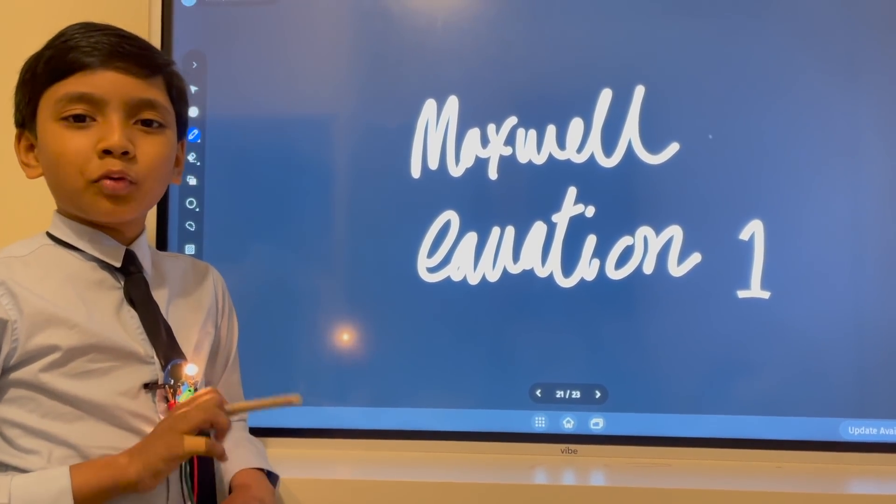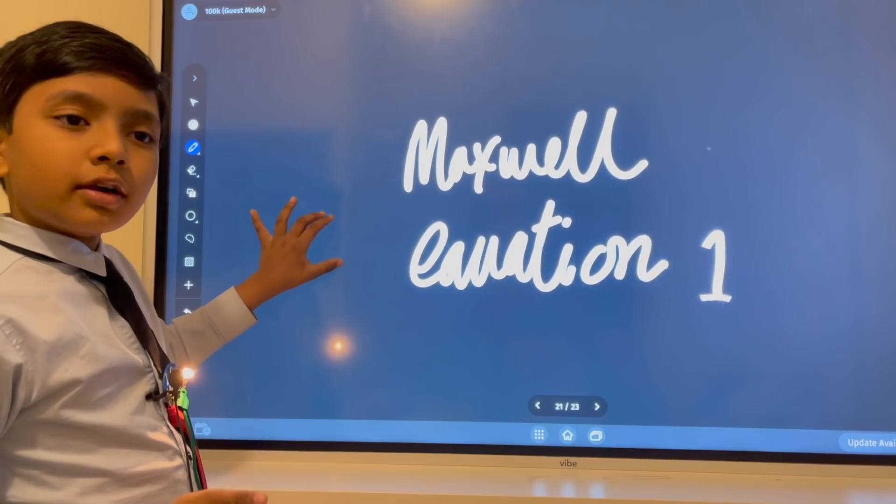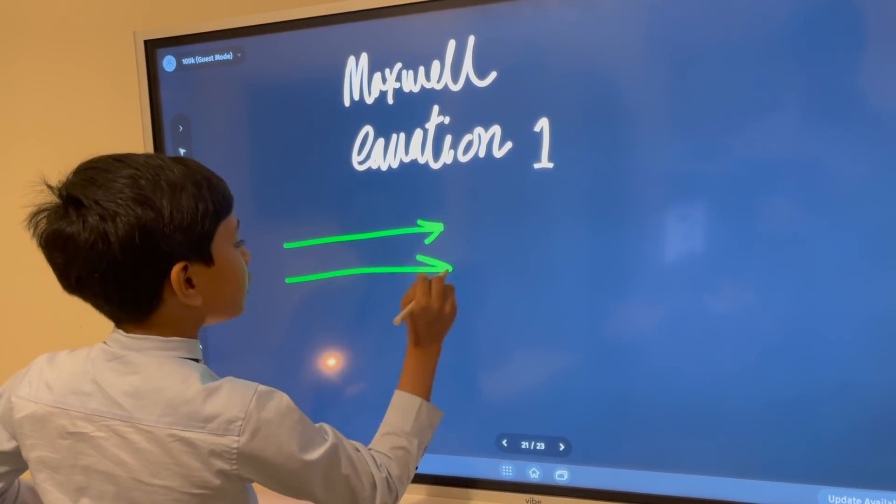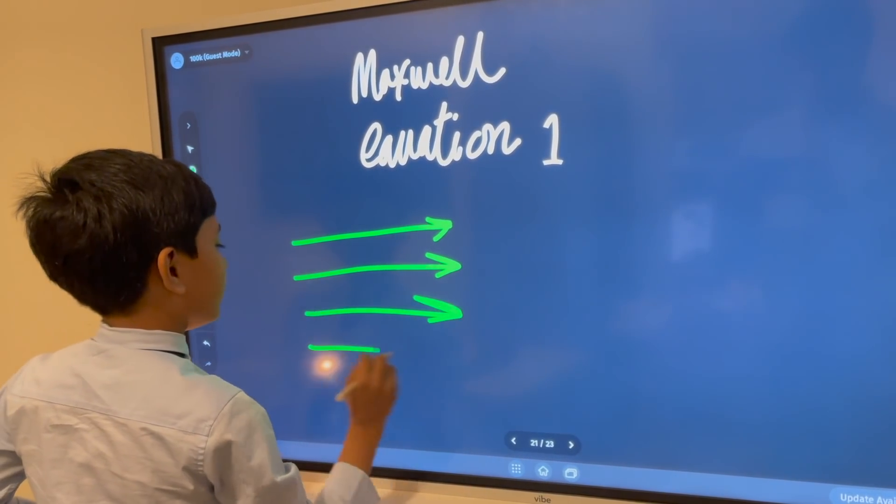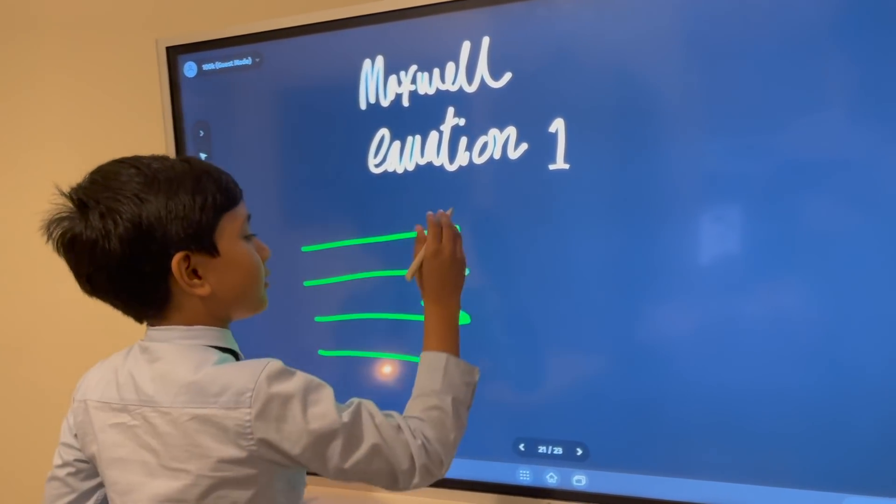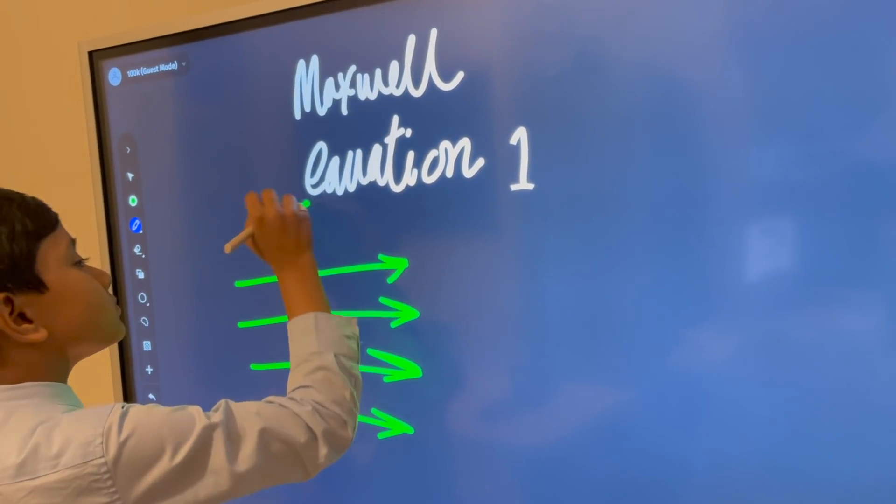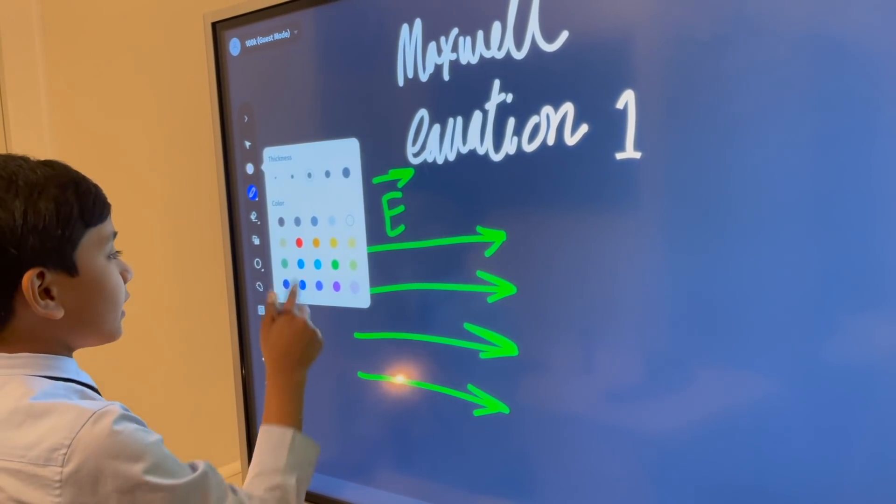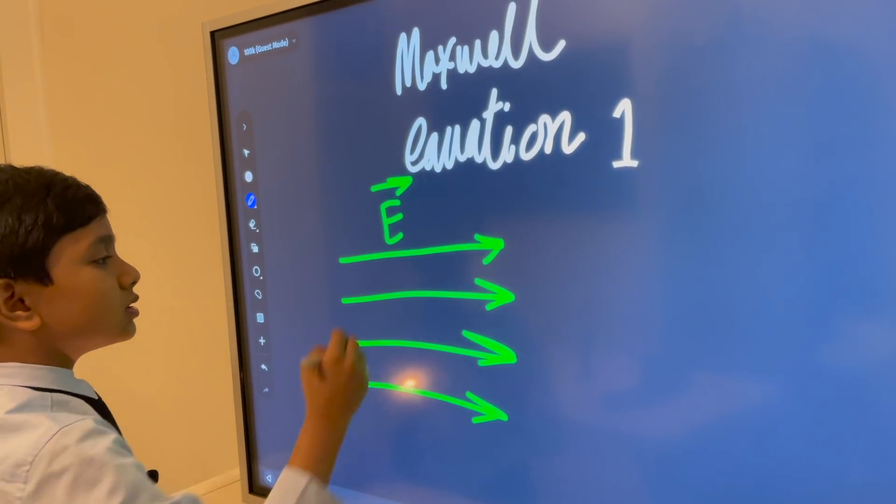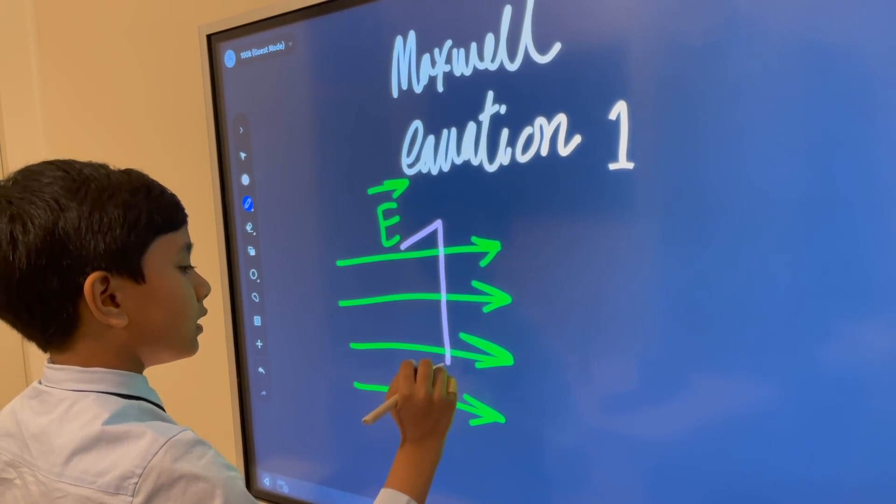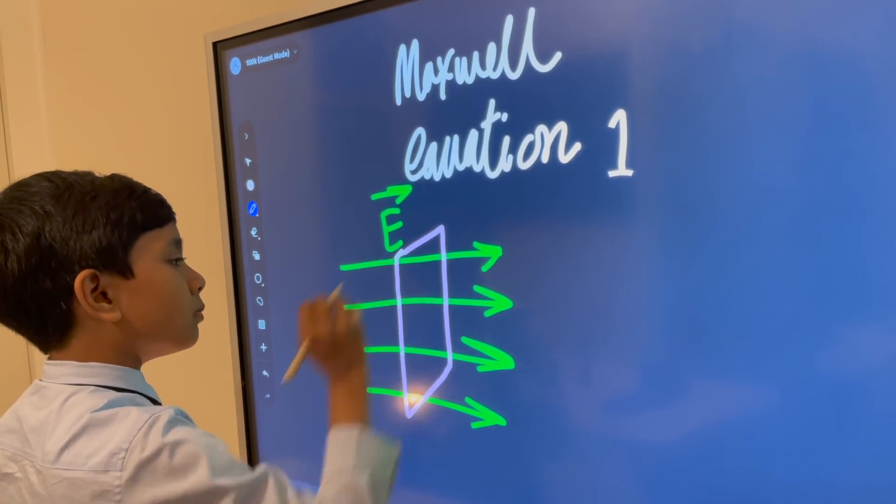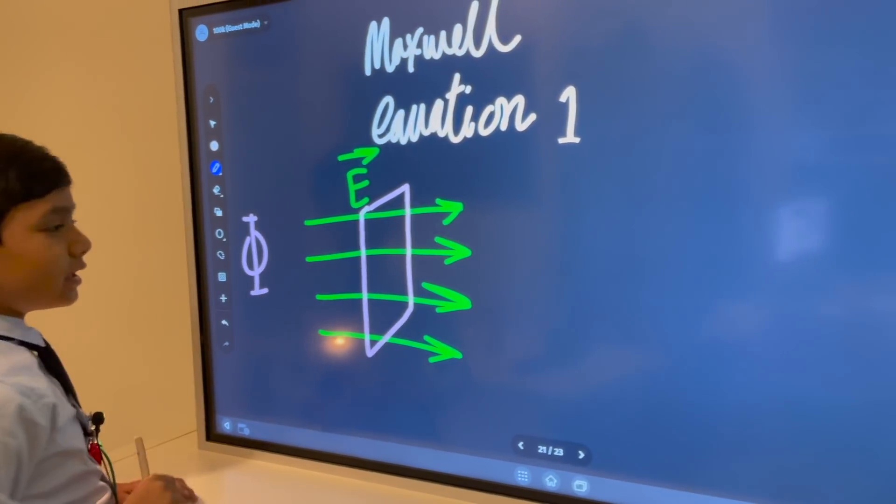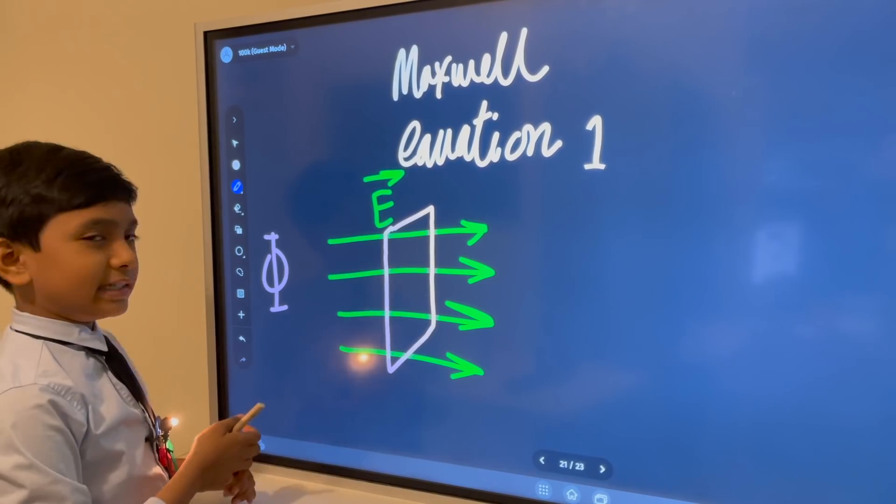So Maxwell's equation number one. First, to understand Maxwell's equation number one, here is our electric field vector. And now, the plane is kind of like a plane in geometry. So if I do this, then it catches most of the electric field. The flux is just how much of the electric field goes through the certain area, that is the plane. It catches a lot of people.